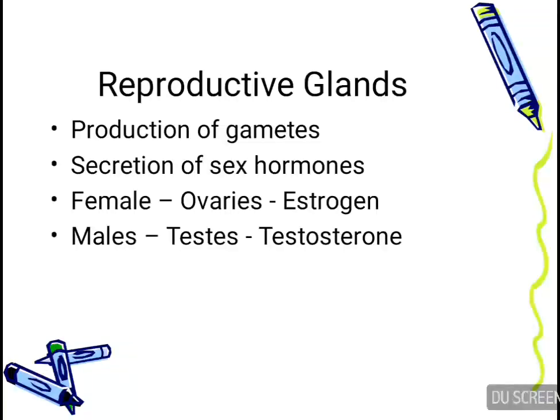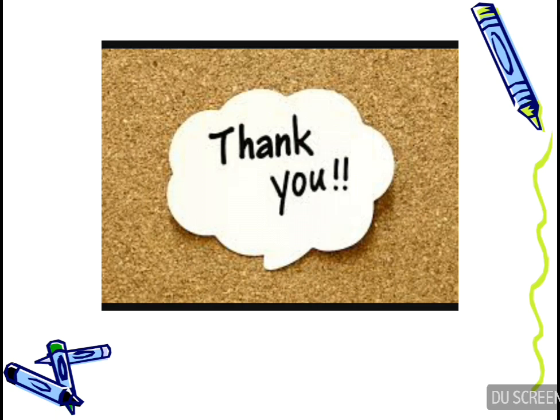Now let's talk about the reproductive glands. They participate in the production of gametes and secretion of sex hormones. In females, we have ovaries which secrete estrogen and progesterone, whereas in males we have testes that produce testosterone. Thank you for watching this presentation — I hope you have learned a lot.